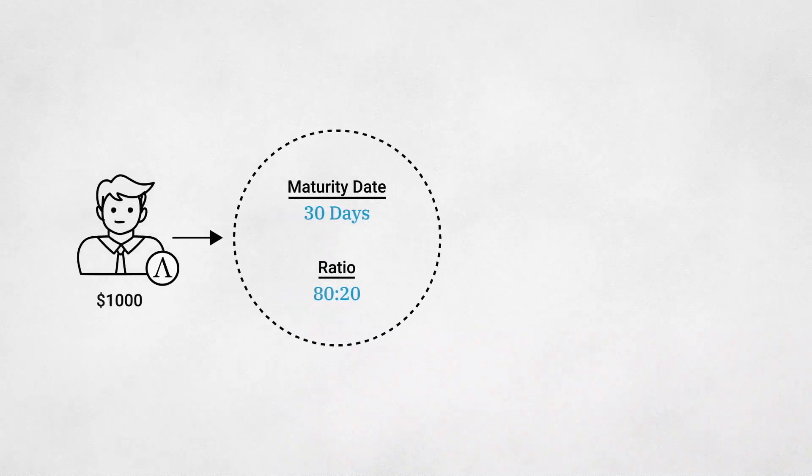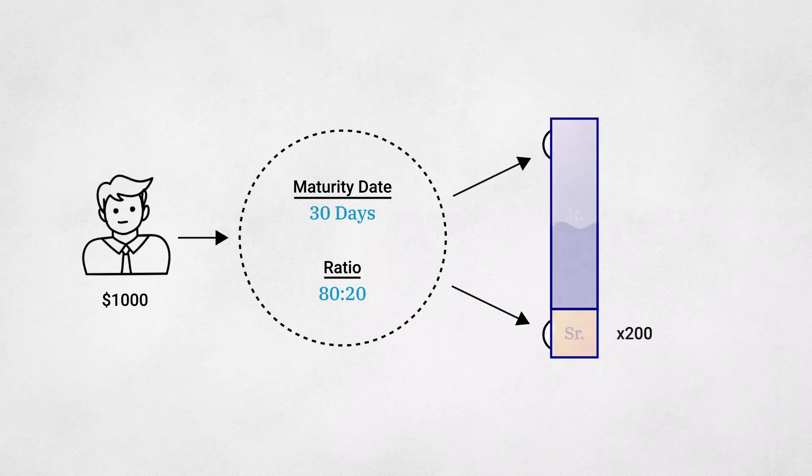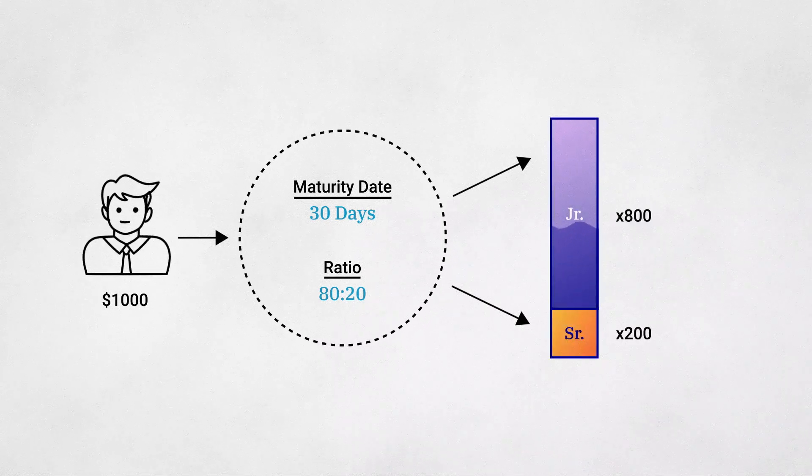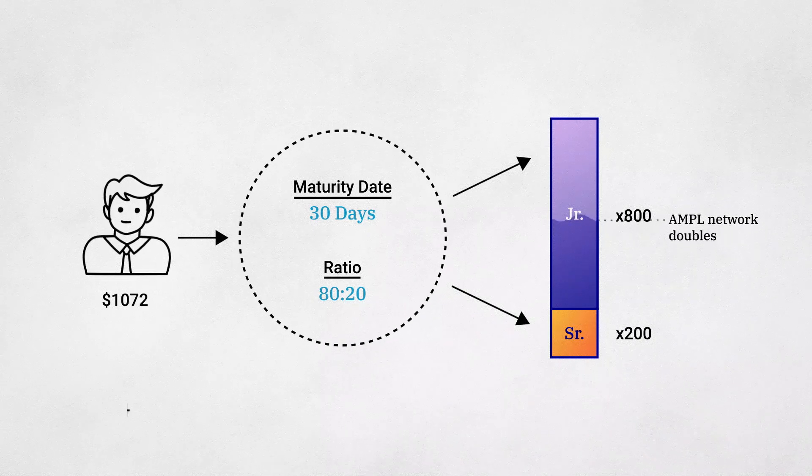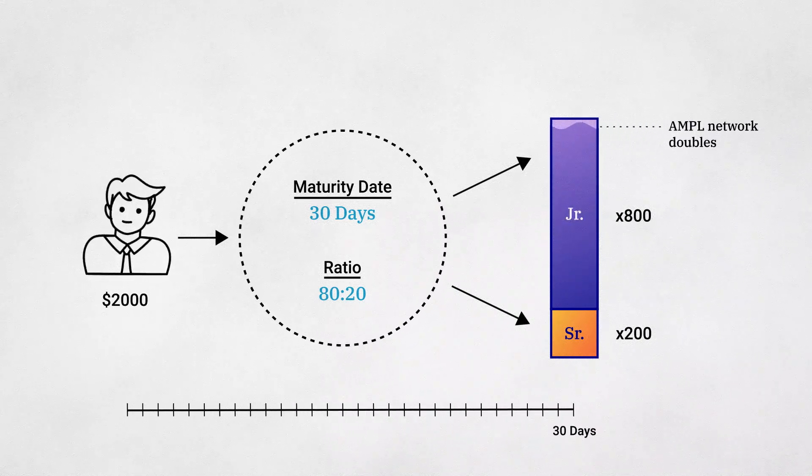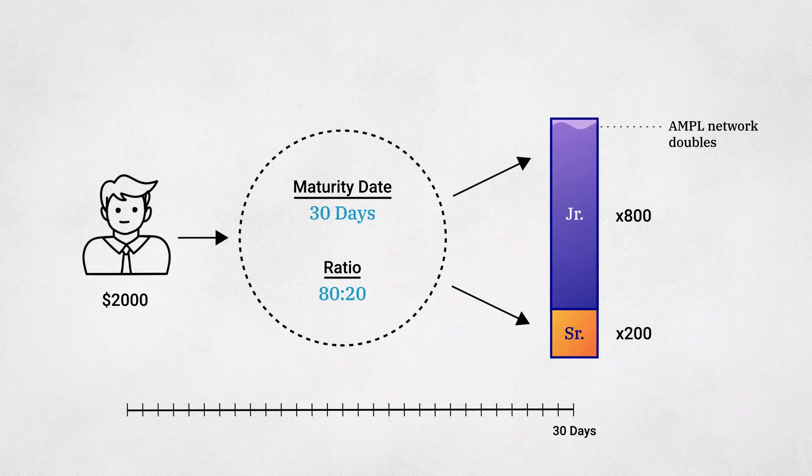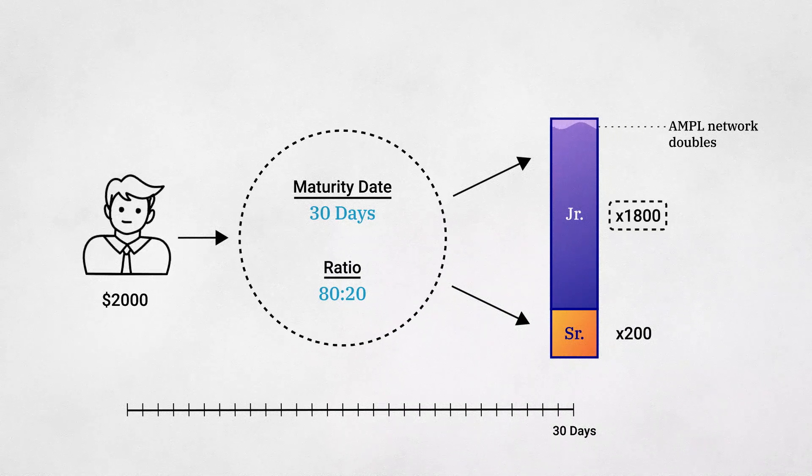If Bob deposits 1,000 CPI-adjusted dollars' worth of Ample, he will receive 200 senior tranche tokens and 800 junior tranche tokens. Let's say the Ample network doubles in size over the 30-day period. His senior tranche tokens will still be redeemable for 200 CPI-adjusted dollars' worth of Ample, but his junior tranche tokens will be redeemable for 1,800 CPI-adjusted dollars' worth of Ample.